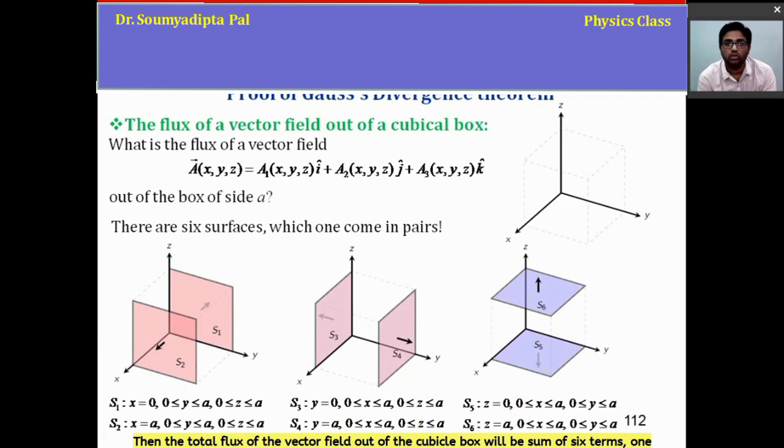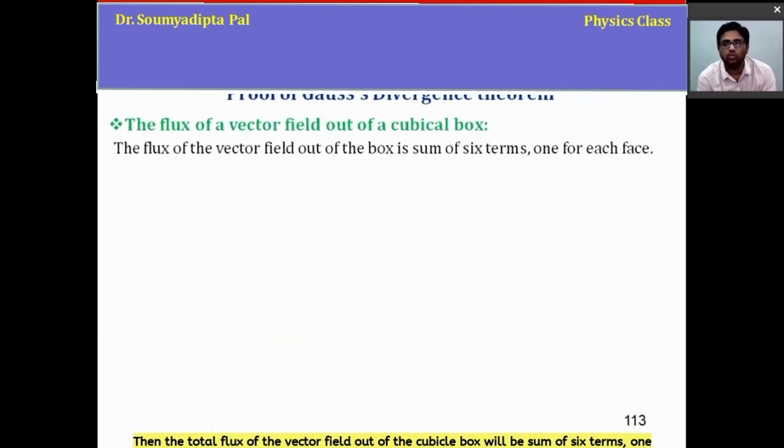Then the total flux of the vector field out of the cubical box will be sum of six terms, one for each face. So let's calculate that.